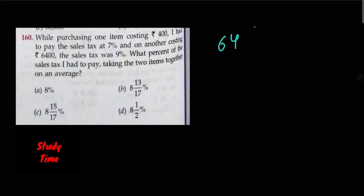Total sales tax paid: 6400 times 9 percent plus 7 percent of 400. Divided by 100.